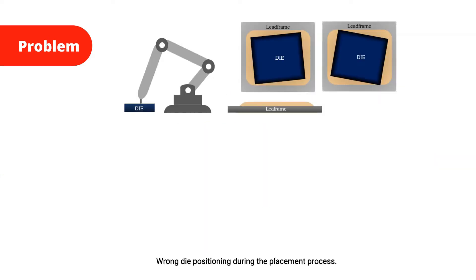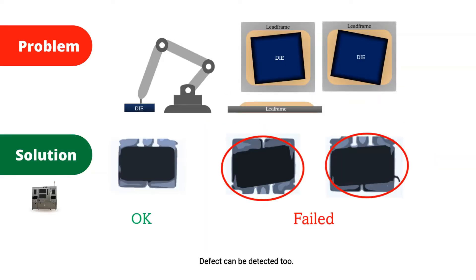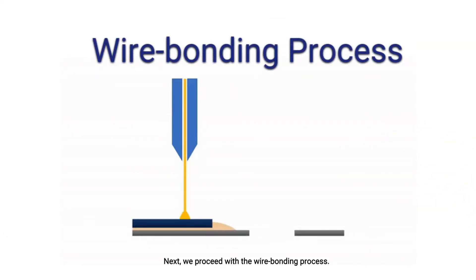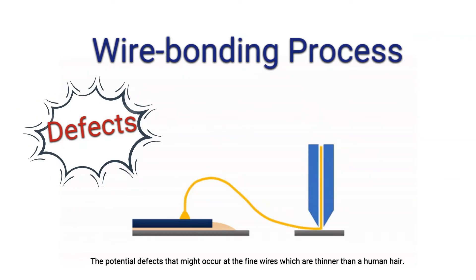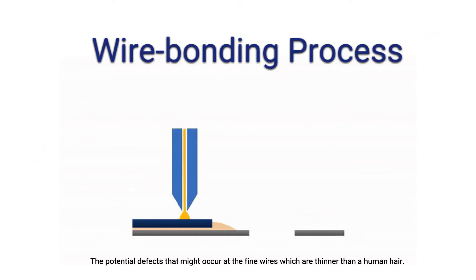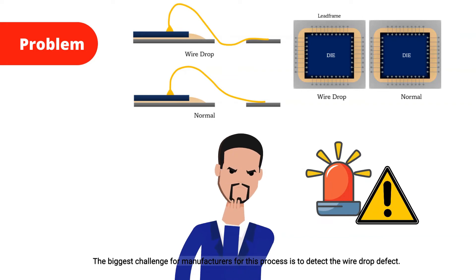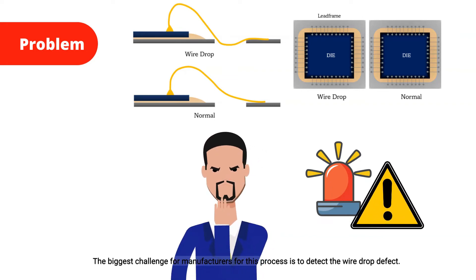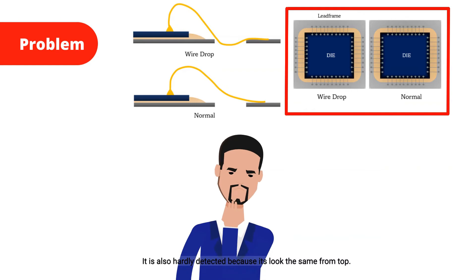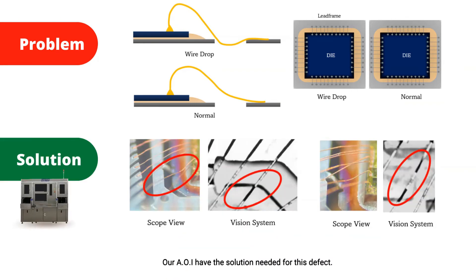Wrong die positioning during the placement process — this defect can be detected too. Next, we proceed with the wire bonding process and the potential defects that might occur at the fine wires, which are thinner than a human hair. The biggest challenge for manufacturers in this process is to detect the wire drop defect. It is also hardly detected because it looks the same from the top. Our AOI has the solution needed for this defect.